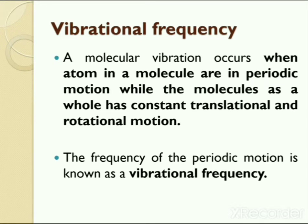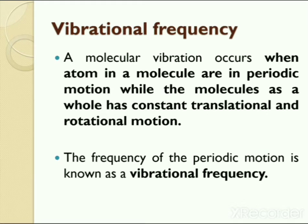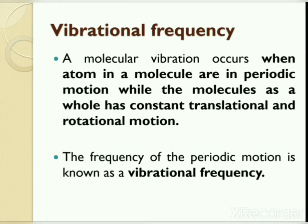Molecular vibration is a periodic motion of the atoms of a molecule relative to each other such that the center of mass of the molecule remains unchanged. We can calculate modes of vibration for different types of molecules. In general, a nonlinear molecule with n atoms has 3n-6 normal modes of vibration, but a linear molecule has 3n-5 modes. These formulas differ because in a linear molecule, rotation about the molecular axis cannot be observed.